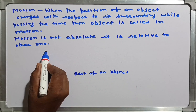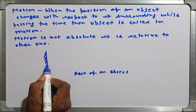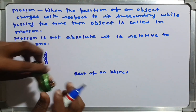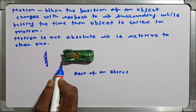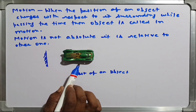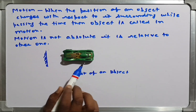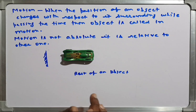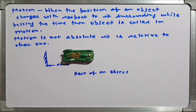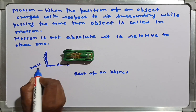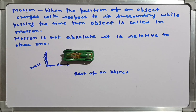Suppose this one is a wall. In front of this wall, one car is here. Unless you apply any force or start the car, it stays as it is. After time passes, it remains the same. So when the position of an object does not change with respect to its surroundings or the reference point — here the wall — then the object is said to be in the rest condition.